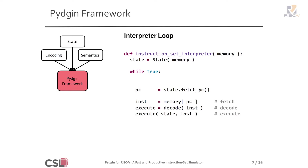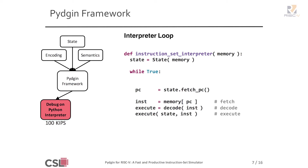These definitions of encoding, state, and semantics feed into the Pigeon framework, which includes templates for things like register file and memory. The most important aspect is the interpreter loop, which does fetch, decode, and execute as usual. All these components are Python code, and also valid RPython code. Because it's still valid Python, you can just run it on a Python interpreter such as CPython or PyPy.